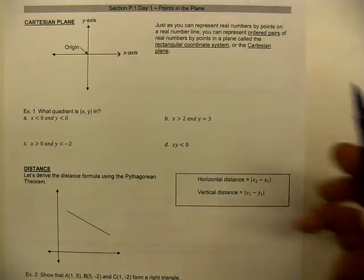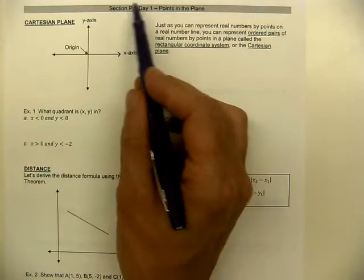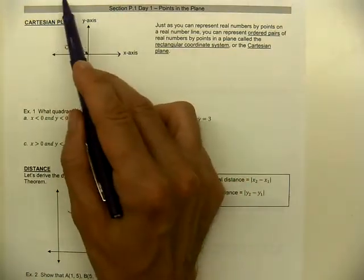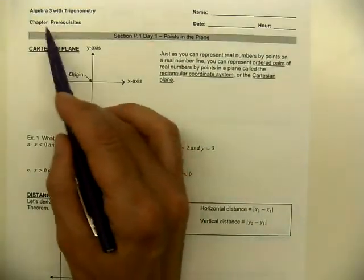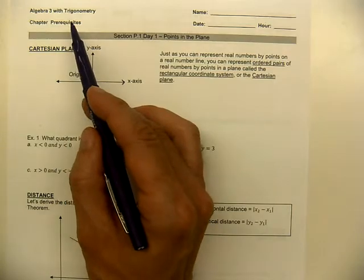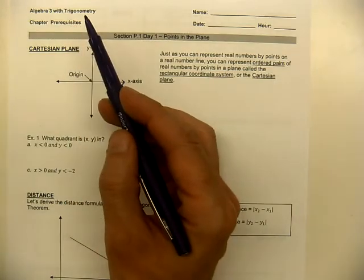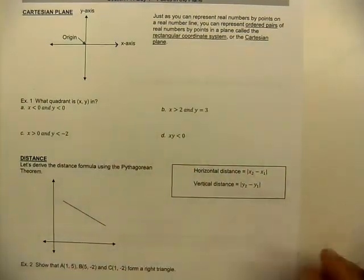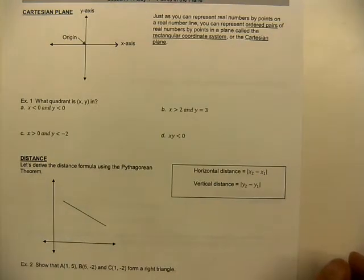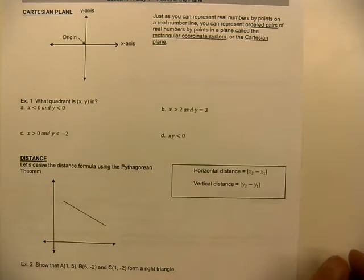Today we're looking at the very first section in the prerequisite chapter from our orange pre-calc book. We're introducing some topics in the section which have to do with discrete pairs of points — slope, distance, and midpoint.